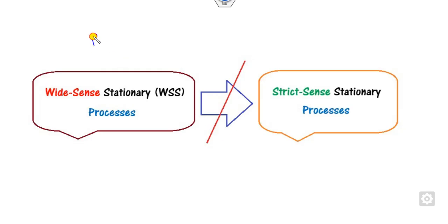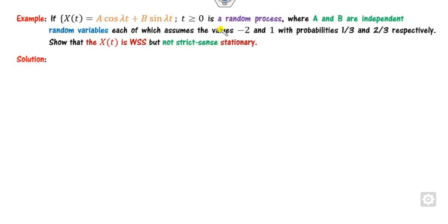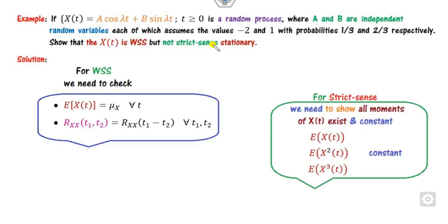An important remark: whenever a process is strict sense stationary, it implies it is also weak sense stationary. But the converse is not true. To illustrate this, consider a random process x where a and b are independent. We have to show this process is weak sense but not strict sense stationary.